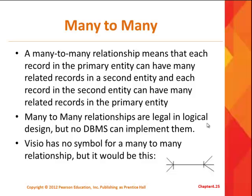When you're in the design process, in the logical stages before you have your database created, you may run across a many-to-many relationship between two entities. For instance, an order can have many items on it — a customer could order many items on one order. And each item in your database could be on many orders; many different customers on many orders may have the same item. So a relationship between orders and items might be a many-to-many.